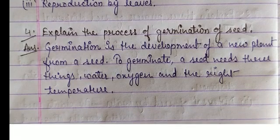Germination is the development of a new plant from a seed. The development of a new plant from a seed is called germination. To germinate, a seed needs water, oxygen, and the right temperature.